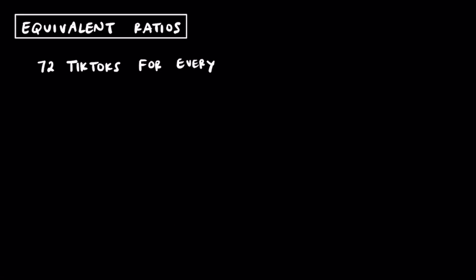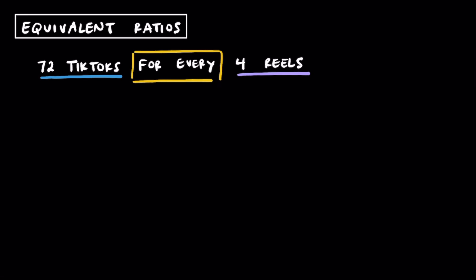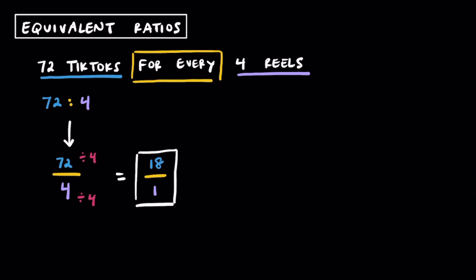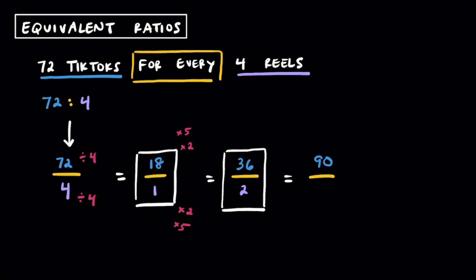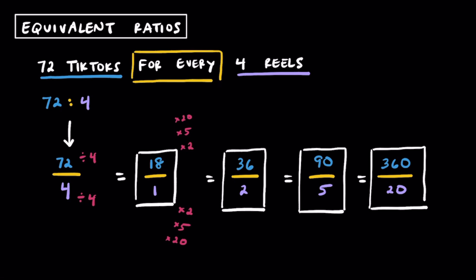Let's look at another example. We have 72 TikToks for every 4 reels. Note that 'for every' also represents a ratio. Writing this in colon form as 72 to 4, then in fraction form, and dividing both by the GCF of 4, we get a simplified ratio of 18 TikToks for every 1 reel. We can get more equivalent ratios by multiplying: doubling gives 36 to 2; multiplying by 5 gives 90 to 5; and multiplying both by 20 gives 360 TikToks for every 20 reels. These are all equivalent ratios.